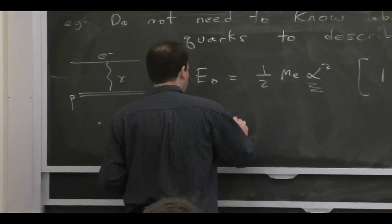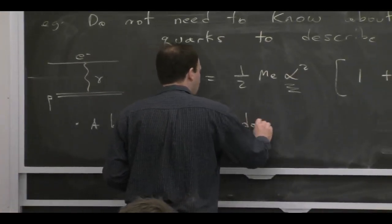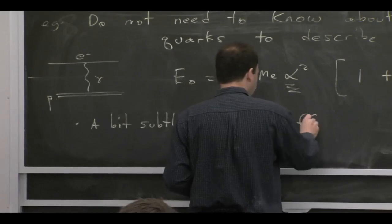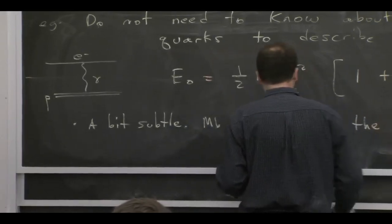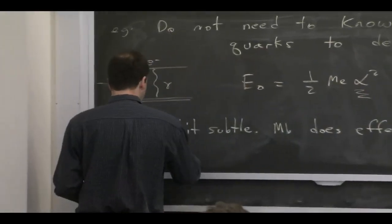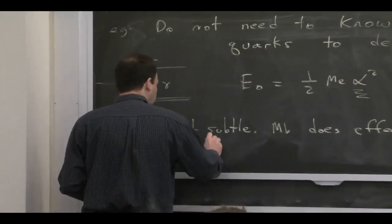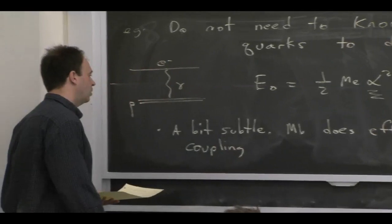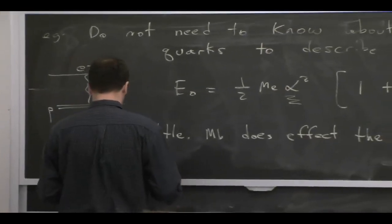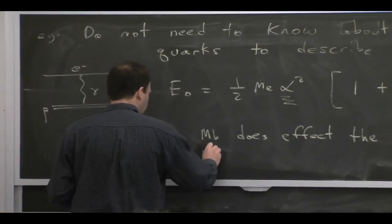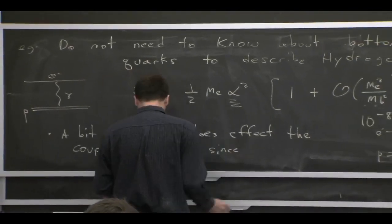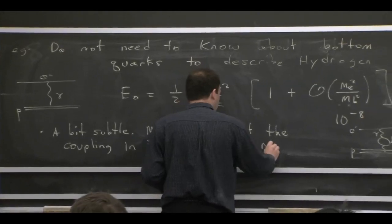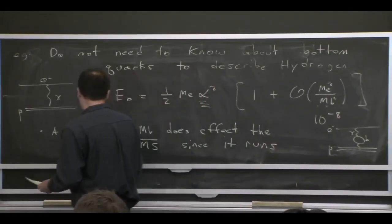From your previous courses in quantum field theory, when you learned about running couplings, you learned that diagrams like that would contribute to running couplings. And so the B quark can affect the coupling. If you worked in, for example, the MS-bar scheme, since it contributes to the running of the coupling.